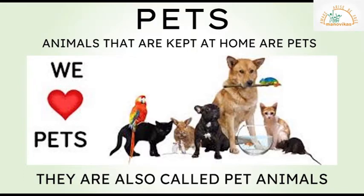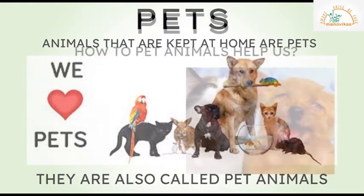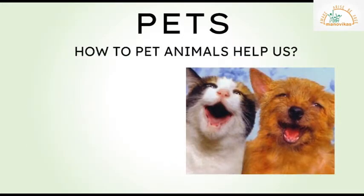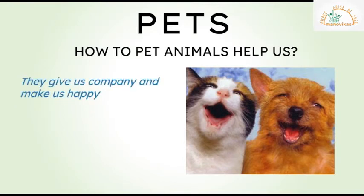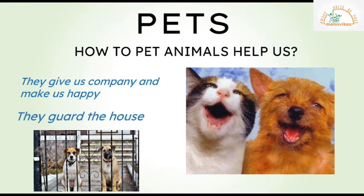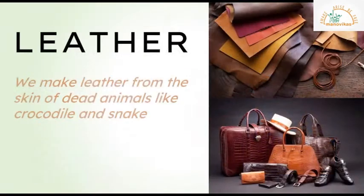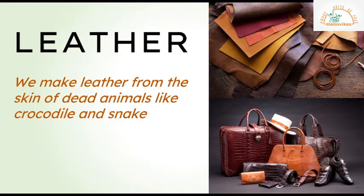Some animals like dogs, cats, fish, and parrots are kept at home as pets — they are also called pet animals. How do pet animals help us? They give us company and make us happy. The dog also guards our house.